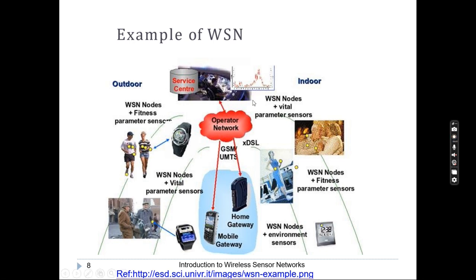Smart cars can monitor passenger weight, over-speed or under-speed, petrol level, health of tires, and overall vehicle health. These things can easily be monitored and appropriate alerts can be given to the driver or the owner of the car.